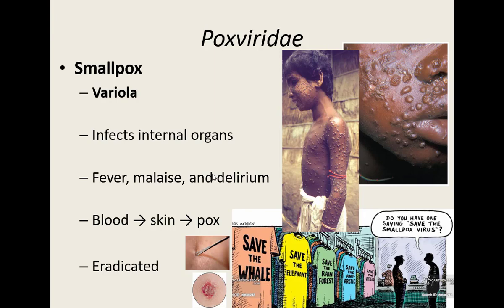The good news is we have actually eradicated smallpox. We developed a vaccine that was extremely effective, and no one gets smallpox anymore. In 1972, we stopped even vaccinating for it — why vaccinate for something that's not around anymore? Some things that helped eradicate it, other than the effective vaccine: smallpox never has asymptomatic carriers, meaning anyone who gets it shows outward lesions very quickly. That means you can isolate and quarantine them to stop the spread.